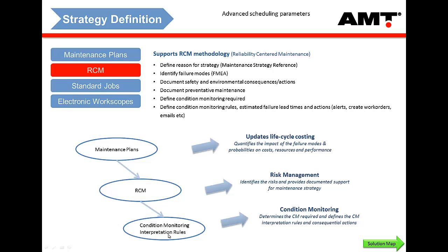At the lowest level, you can put in your associated condition monitoring so that when you bring in condition monitoring data, it interprets those results against the failure modes. For example, it highlights to users not just that your silicon level has gone up on your engine oil, but that this is an indicator of oil contamination that can cause a specific failure on the engine — providing that extra level of automation of condition monitoring coming back into AMT.